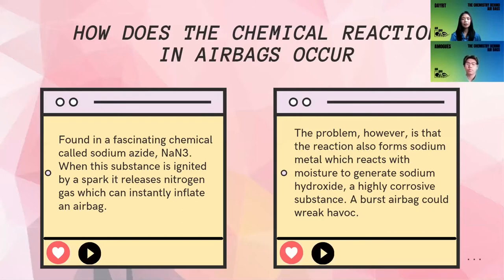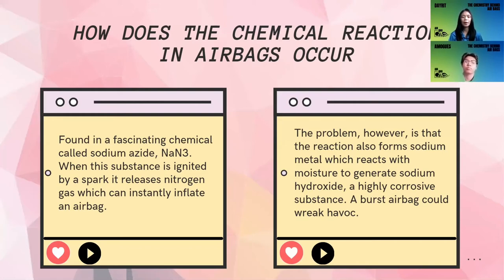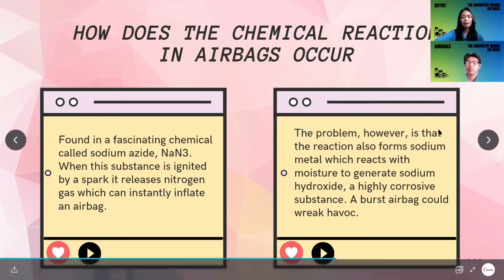How does the chemical reaction in airbags occur? Found in a fascinating chemical called sodium azide, or NaN3 — take note of that. When this substance is ignited by a spark, it releases nitrogen gas, which can instantly inflate an airbag. The actual gas that inflates the airbag is nitrogen gas. However, the reaction also forms sodium metal, which reacts with moisture to generate sodium hydroxide, which is a highly corrosive substance — a problem for a burst airbag near people.